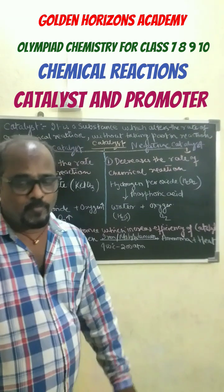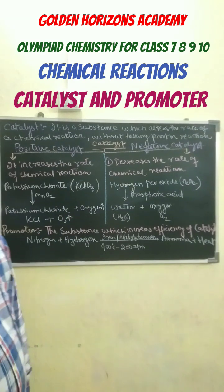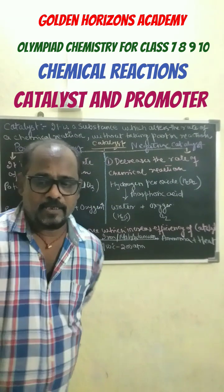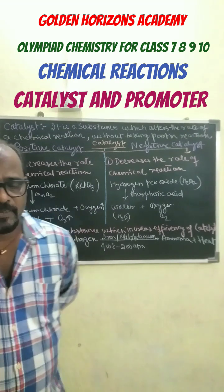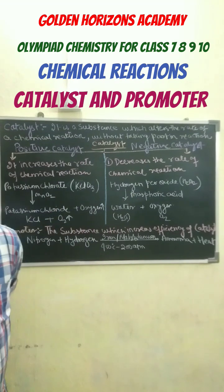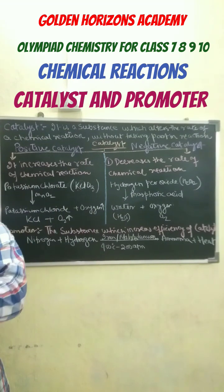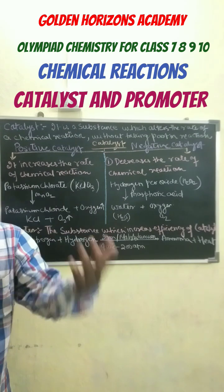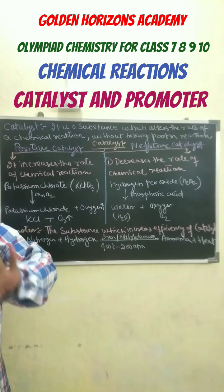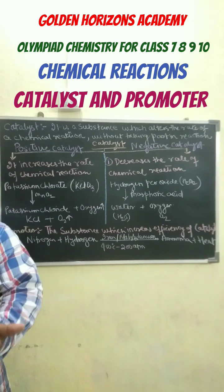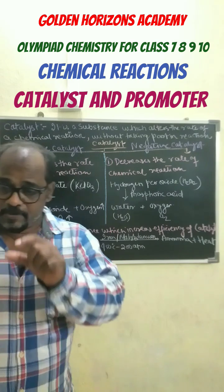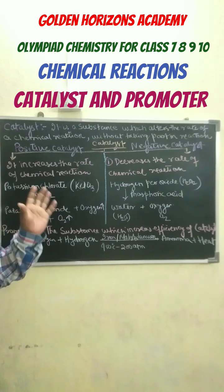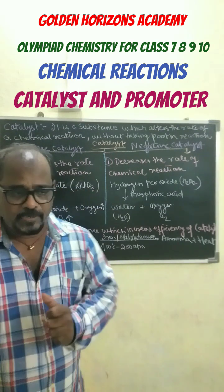Today we will be reading about one more type of chemical reaction — catalytic reactions. Catalytic reactions means it is a reaction in which a substance will be used. That substance will not take part in the chemical reaction but it will alter the rate of chemical reaction. Such substances are said to be catalysts, which are used in the catalytic reaction.